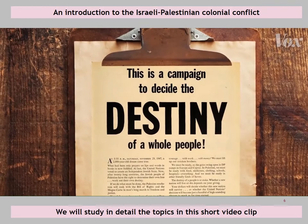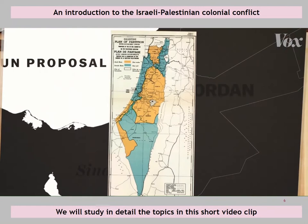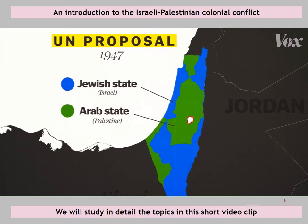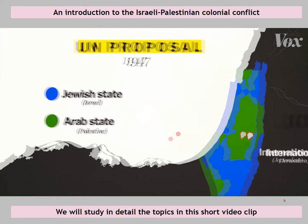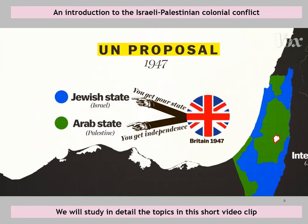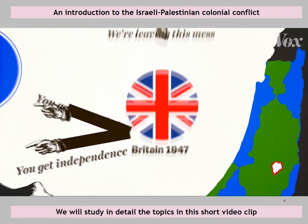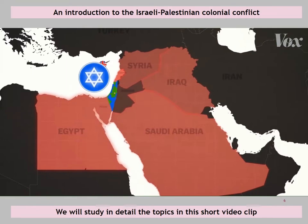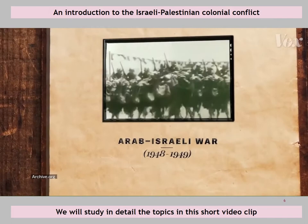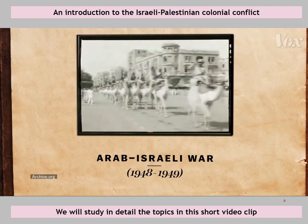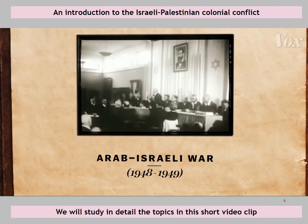In 1947, as sectarian violence between Jews and Arabs there grew, the United Nations approved a plan to divide British Palestine into two separate states — one for Jews, Israel, and one for Arabs, Palestine. The city of Jerusalem, where Jews, Muslims, and Christians all have holy sites, was to become a special international zone. The plan was meant to give Jews a state, to establish Palestinian independence, and to end the sectarian violence the British could no longer control. The Jews accepted the plan and declared independence as Israel. But Arabs throughout the region saw the UN plan as just more European colonialism trying to steal their land.